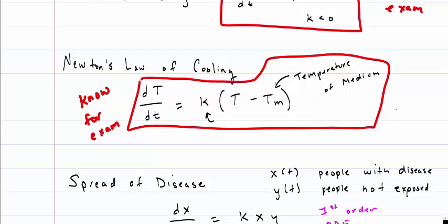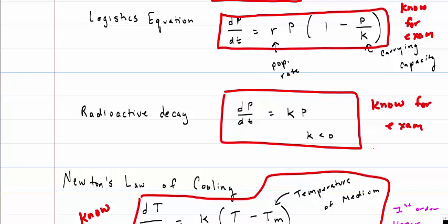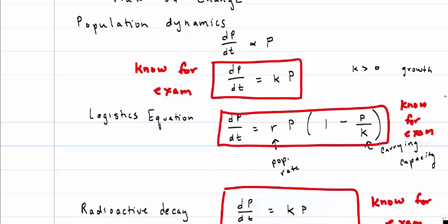This also looks like a first order. This one looks linear. It's an ODE, and again it's autonomous. For radioactive decay, first order, linear, ODE, and autonomous. And the same with the population dynamics.